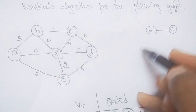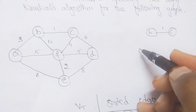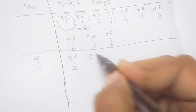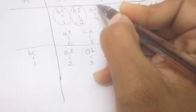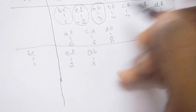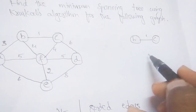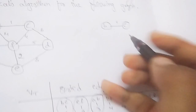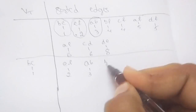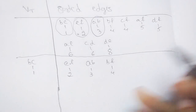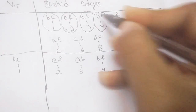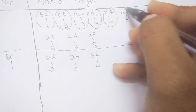Next, check AB: attaching A here does not form a cycle, so we take AB with weight 3. Then check BF: attaching F here does not form a cycle, so we take BF with weight 4.